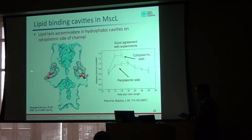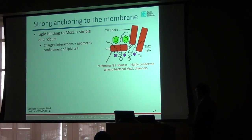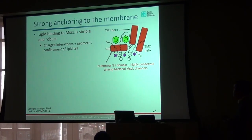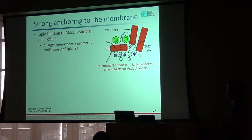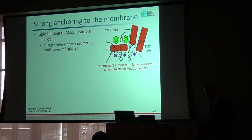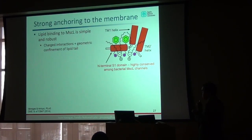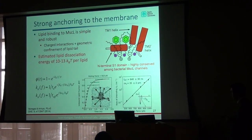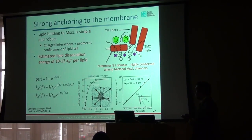The cytoplasmic side has higher affinity for lipids because of these hydrophobic cavities. Looking at this motif: the protein has positively charged amino acids interacting with negatively charged portions of the lipid head group — a nice electrostatic interaction — plus confinement of the lipid tails in the hydrophobic cavities. This region of the protein is very highly conserved, and in biology, highly conserved regions are structurally important — they cannot be easily tweaked without destroying function.